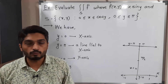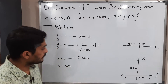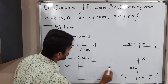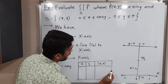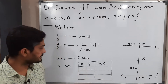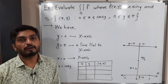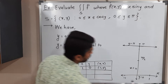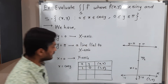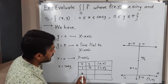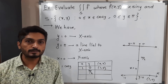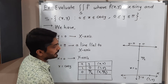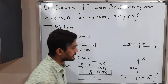We will find some points on the curve, join them by freehand drawing, and get the required curve. I am drawing a table with values of Y and the corresponding X. Starting with Y equals zero: cos(0) is 1, so the point is (1, 0). Next, Y equals π/2: cos(π/2) is 0, so the point is (0, π/2).